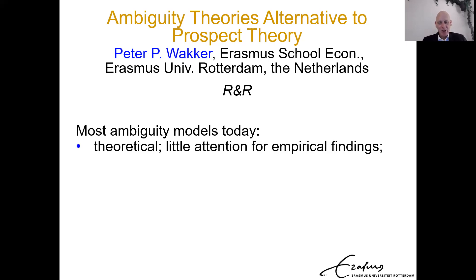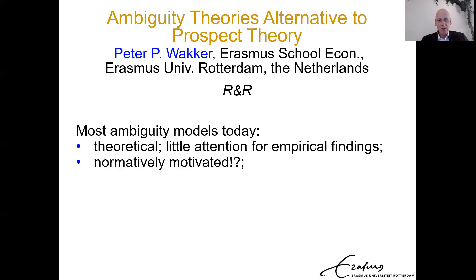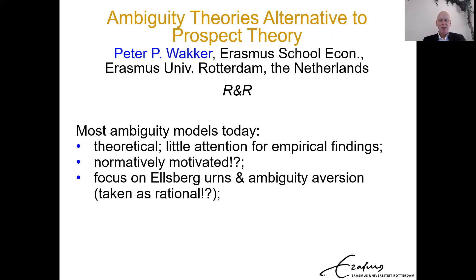Many theoretical models are being introduced, but usually there's not much communication between theoretically and empirically oriented people. Many of these theoretical models don't fit well with empirical findings, and there's not many attempts to fit with that. So that's one point where the field is weak and needs more work. Some authors may say their model is normatively motivated, but I find it a bit unclear. Another problem I have is too much focus on the Ellsberg urns — they are not representative for natural ambiguity, I think. So we should study different events.